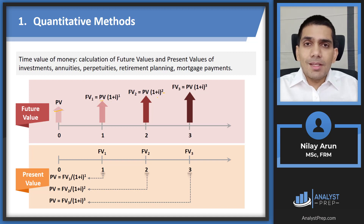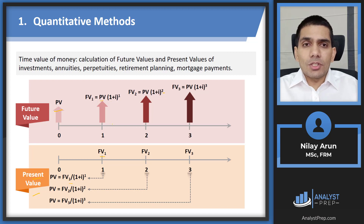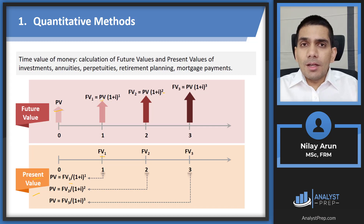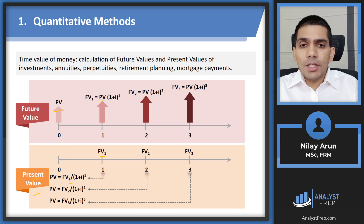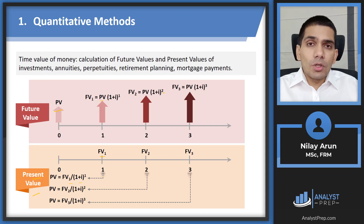The reverse process is discounting — basically the calculation of present value. If you've been given a future value FV1, which is the future value in year one, how do we get it back to the present value? We divide it by (1+i). So the present value = FV1 ÷ (1+i)^1. We can discount every single cash flow like that — FV2, FV3 — and that's the application of the timeline in quantitative methods.